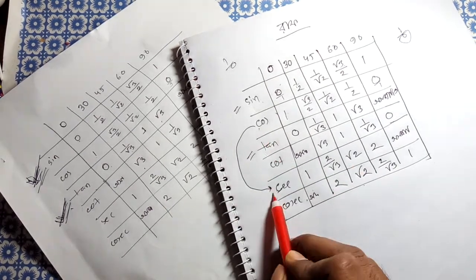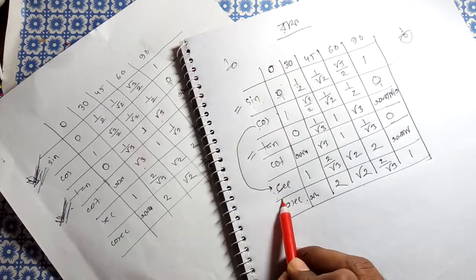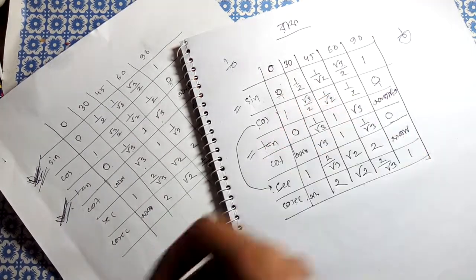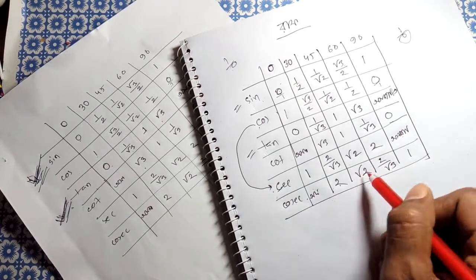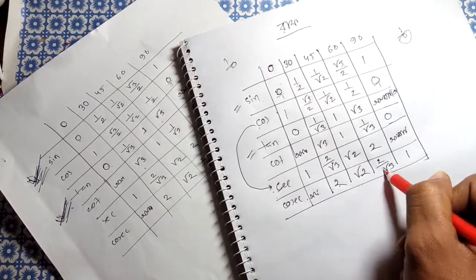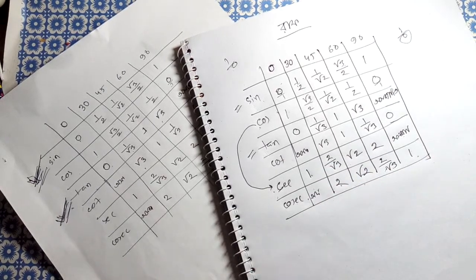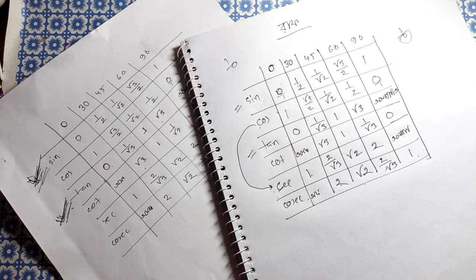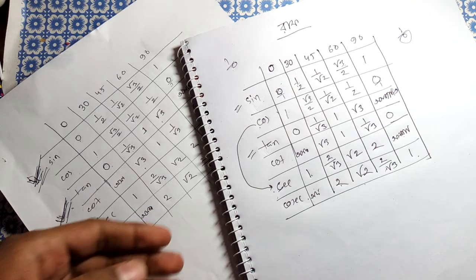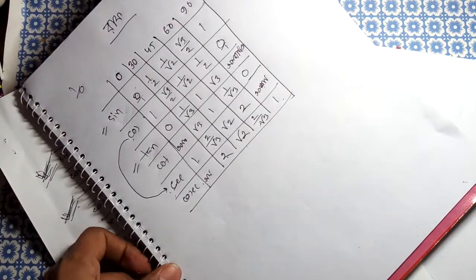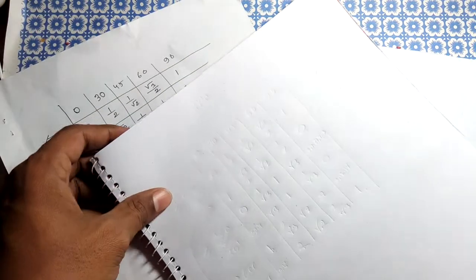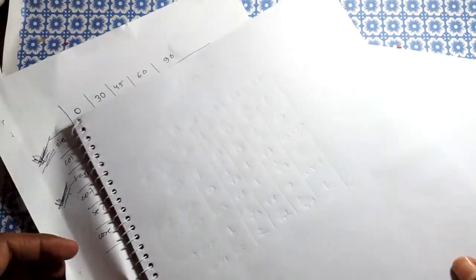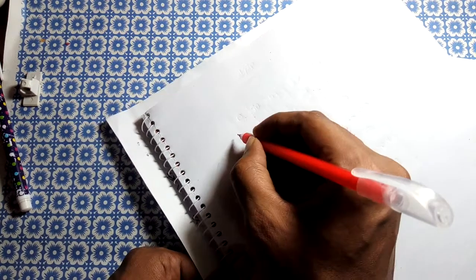For cosec theta, which is 1 over sin theta: at 0 degrees it's 1 by 0 which is undefined, then 2, root 2, 2 by root 3, and finally 1 at 90 degrees. These follow naturally from the sin values.